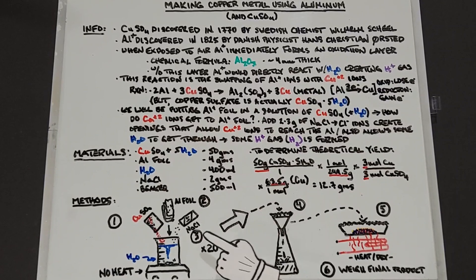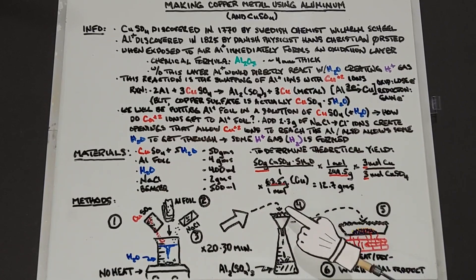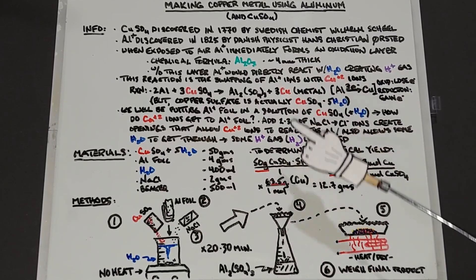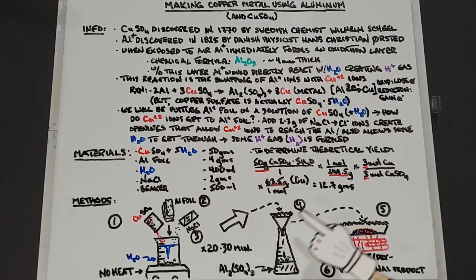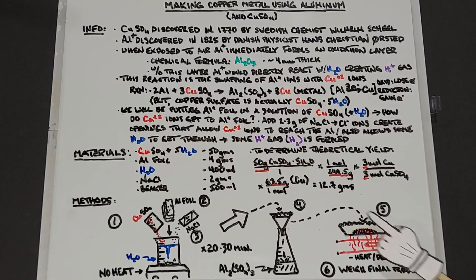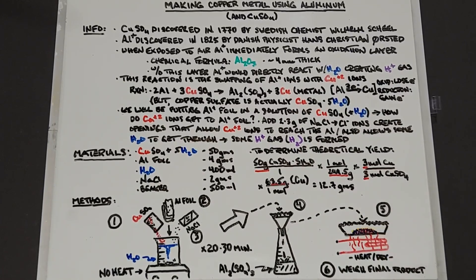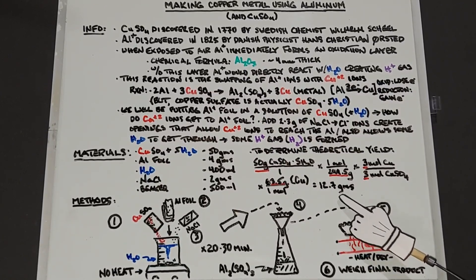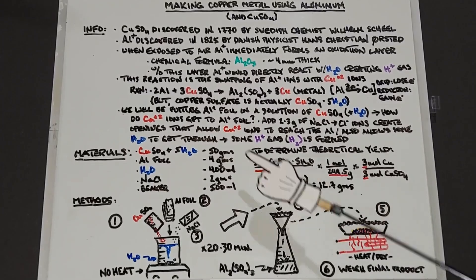Next we're going to filter this solution. We'll be filtering through the aluminum sulfate which is formed, and the copper metal will of course stay in the filter paper. We then take that out and dry it. Finally we want to weigh it compared to what we hope to get to find out what our percent yield is. But in the end we'll have tiny bits of copper metal weighing hopefully close to 12.7 grams. That's a wrap, let's go do this and make some copper metal.